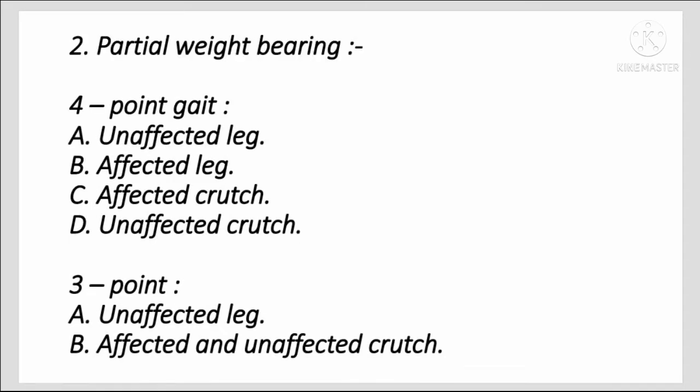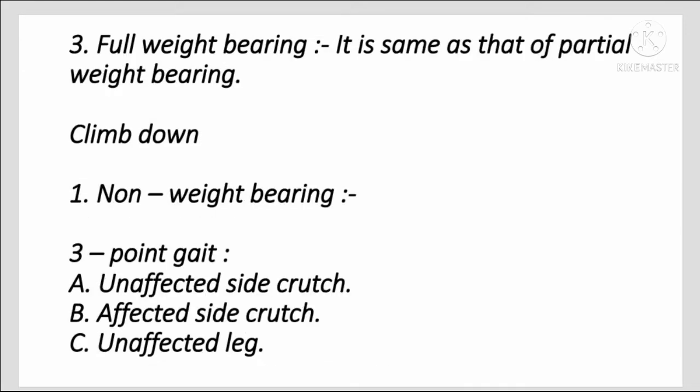For partial weight bearing climbing up: 4-Point Gait pattern — first unaffected leg, then affected leg, then affected crutch, then unaffected crutch. 3-Point Gait pattern — first unaffected leg, then affected and unaffected crutch together. Full weight bearing gait climbing up is the same as that of partial weight bearing.